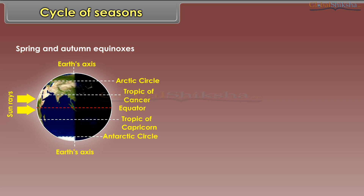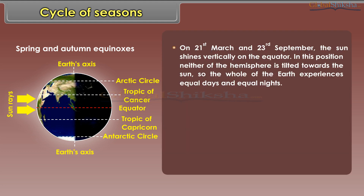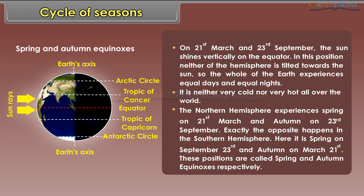On 21st March and 23rd September, the sun shines vertically on the equator. In this position, neither hemisphere is tilted towards the sun, so the whole earth experiences equal days and equal nights. It is neither very cold nor very hot all over the world. The northern hemisphere experiences spring on 21st March and autumn on 23rd September. Exactly the opposite happens in the southern hemisphere — it is spring on 23rd September and autumn on 21st March. These positions are called spring and autumn equinoxes respectively.